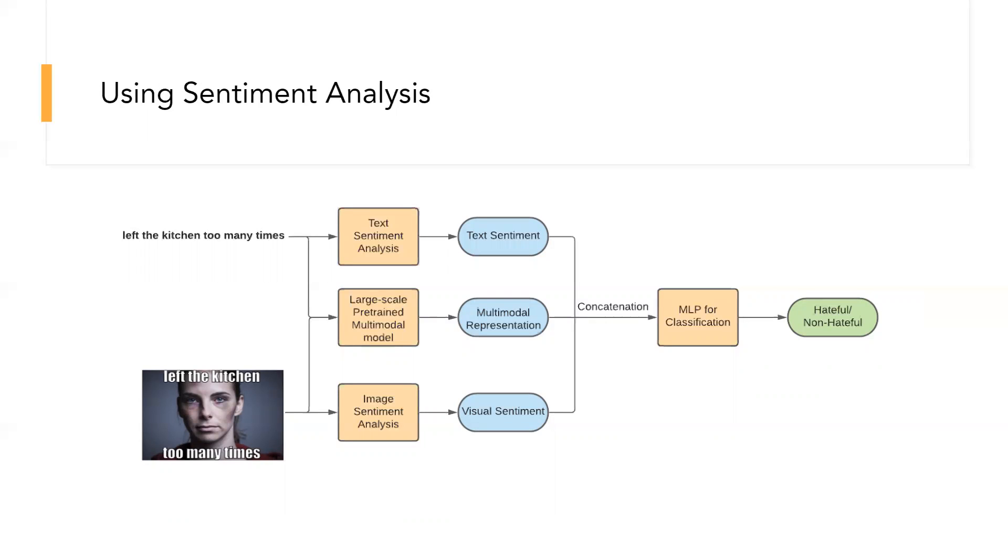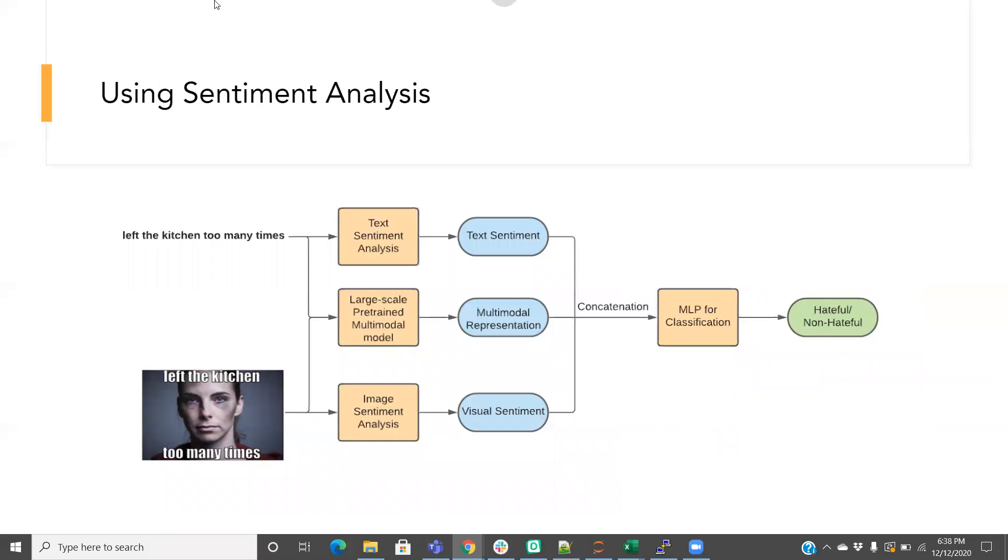During the error analysis, we also found that fine-tuning multimodal representation models like visual BERT does not always provide desirable results. It may be because those models are trained to predict the semantic correlation between image and text, but the semantic information is difficult to capture and may not be enough for solving our task. Thus, we try to include some high-level features like text and image sentiments to aid the prediction because the sentiment analysis is related but relatively simple.